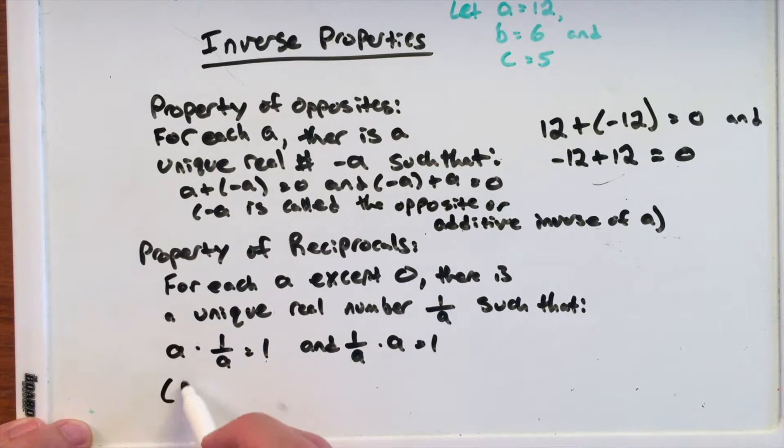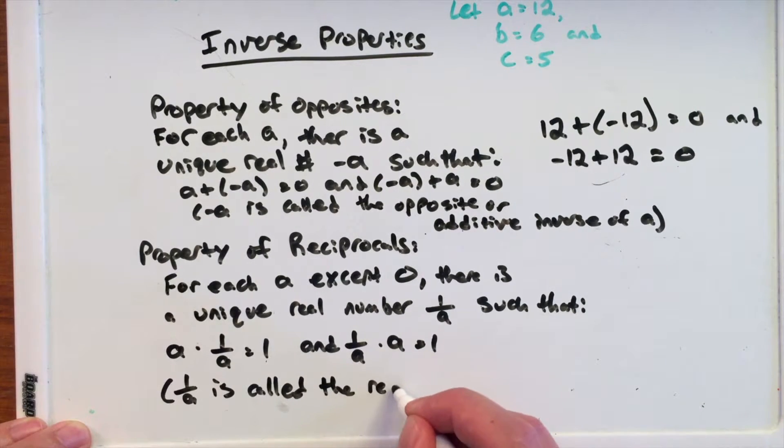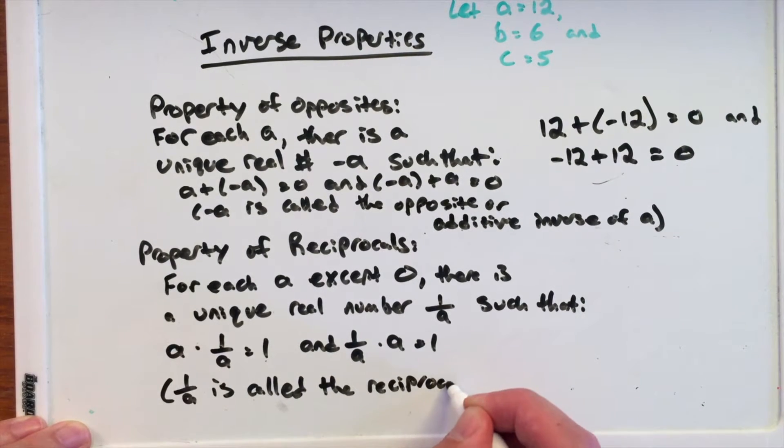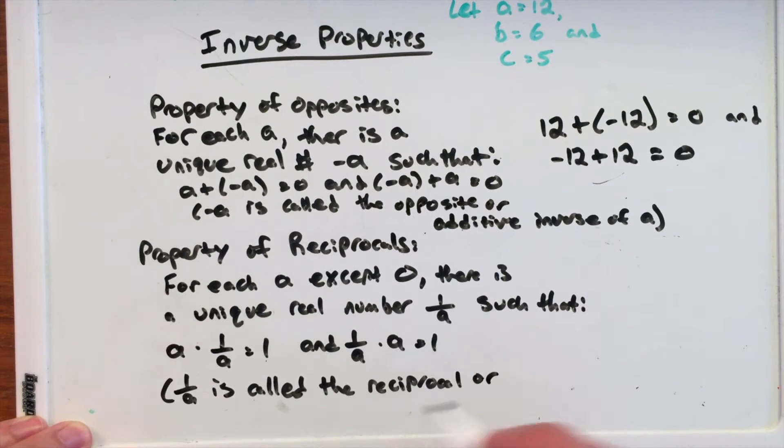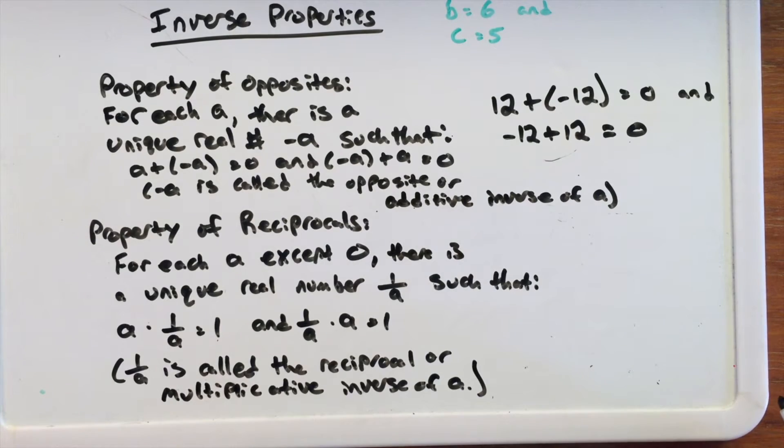But we call the 1 over A is called the reciprocal or multiplicative inverse of A. It's multiplicative inverse of A.